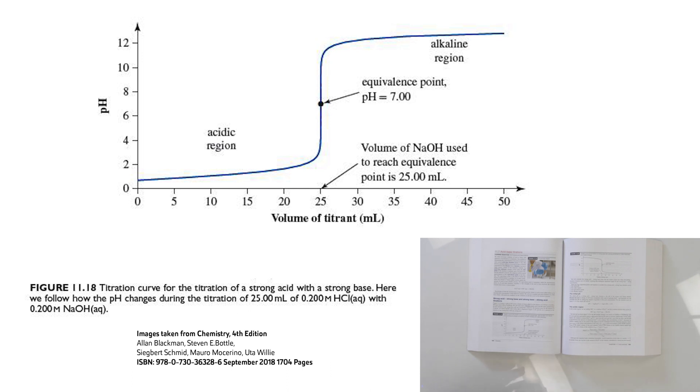So you get a massive change, and then out past the equivalence point the pH again doesn't change very much at all. What are the important points in our pH curve? One very important point is the equivalence point. The equivalence point of any titration is the point where the reaction stoichiometry is satisfied — in other words, it's when the reaction has finished, when you've added exactly the same number of moles of your base as you had moles of your acid to start with.